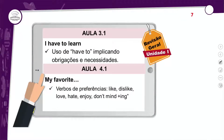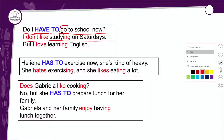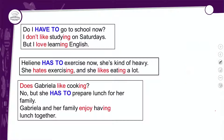Na aula 3.1, a gente viu sobre a questão do uso do have to implicando obrigações e necessidades. Na aula 4.1, a gente viu sobre verbos de preferência: like, dislike, love, hate, enjoy. E a questão do don't mind mais o -ing. Você precisa do have mais o to e um verbo base sem o to para fazer essa questão de obrigação ou necessidade. Do I have to go to school? — Eu preciso ir para a escola? I don't like studying on Saturdays — mostrando a questão da preferência, onde a atividade vem com o -ing.